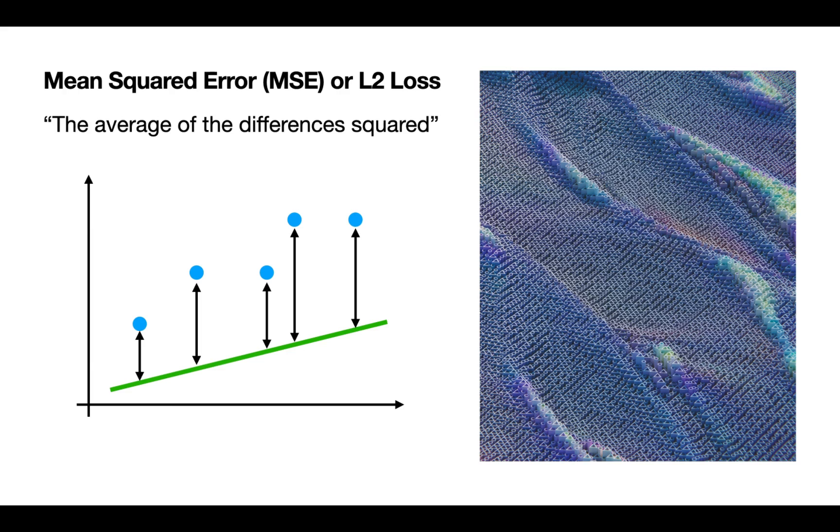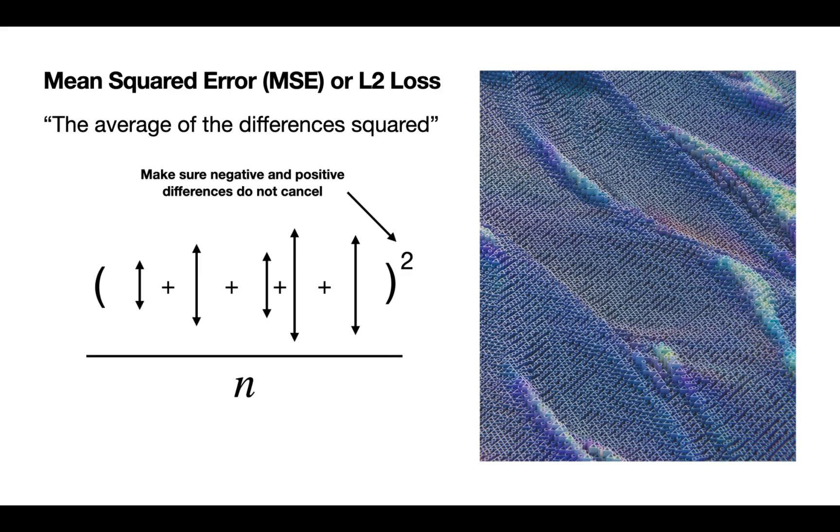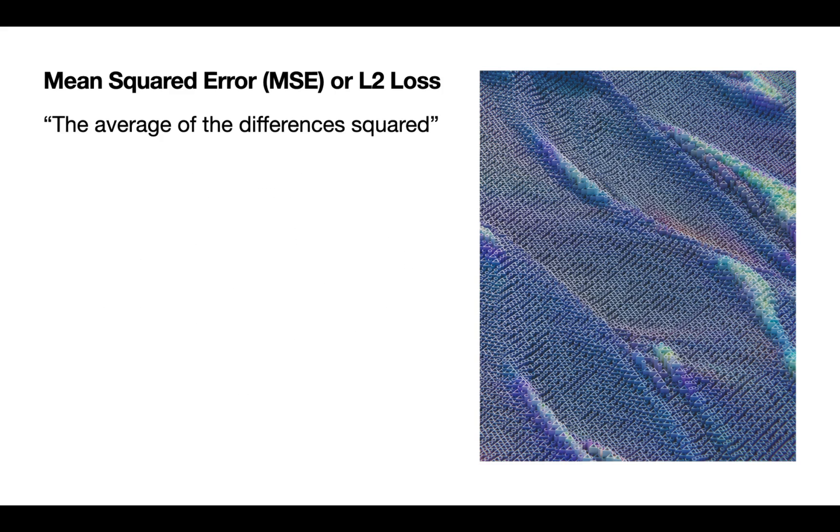The most common one is called the mean squared error, MSE, or the L2 loss. Really what we're doing is taking all of these differences between our predictions and the data points, we add them up, and we also make sure to square them so that if we're having a negative and a positive difference that we don't cancel each other out. We square them and then divide it by n.